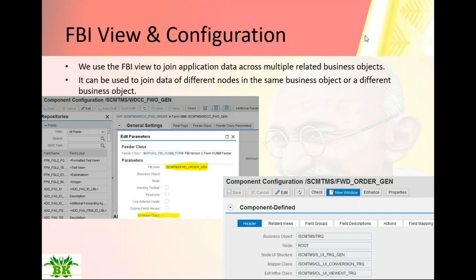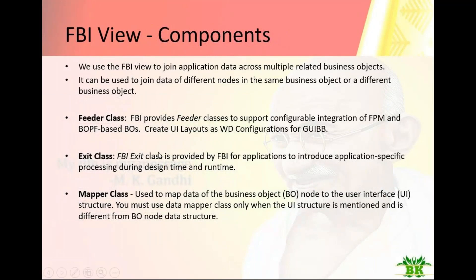The other configuration in FBI is view configuration, where you define the business object, node, and UI structure. The feeder class supports configurable integration of FPM and BOPF, bringing metadata from BOPF to design the UI layout. The exit interface class is specific to GABB and is used to control field visibility, change field label names dynamically, enable or disable fields, and modify data format before display. The mapper class - also called conversion class - is used for unit of measure conversions, date conversions, and currency conversions.